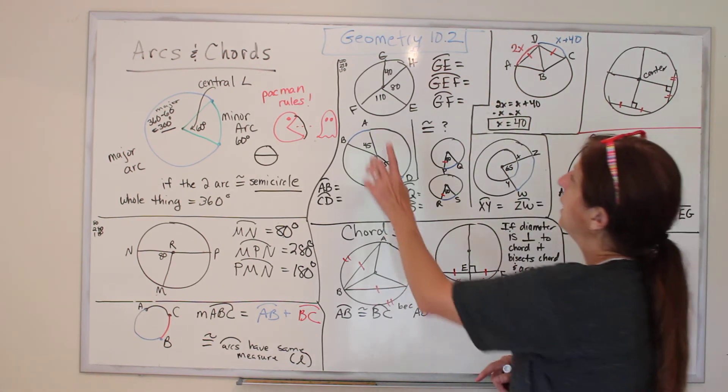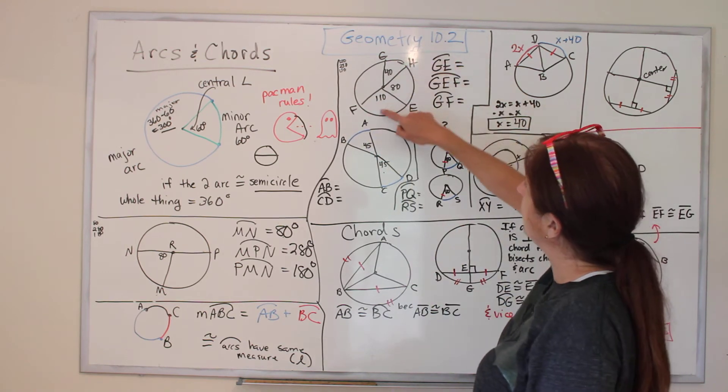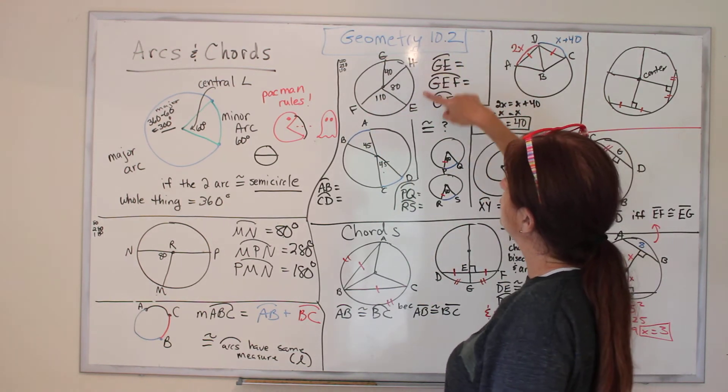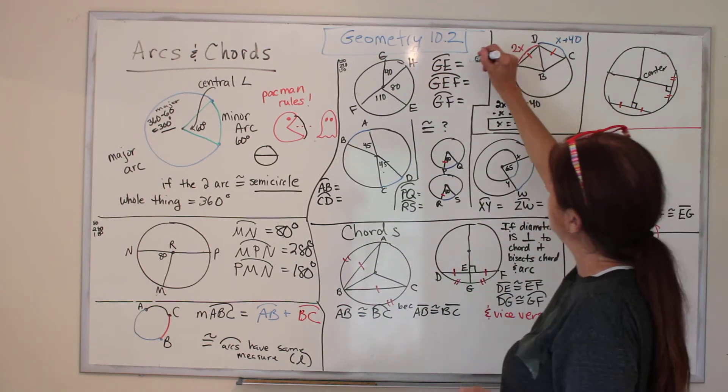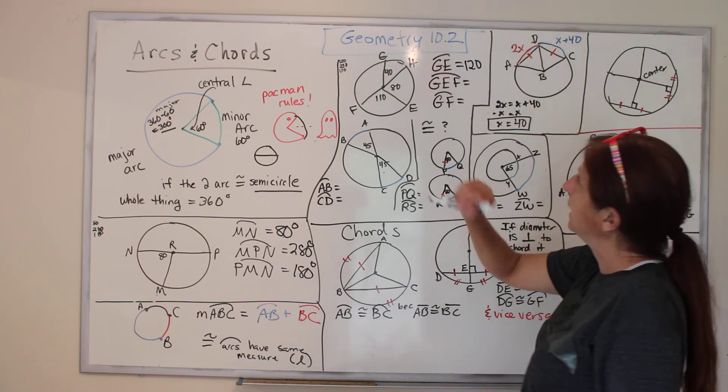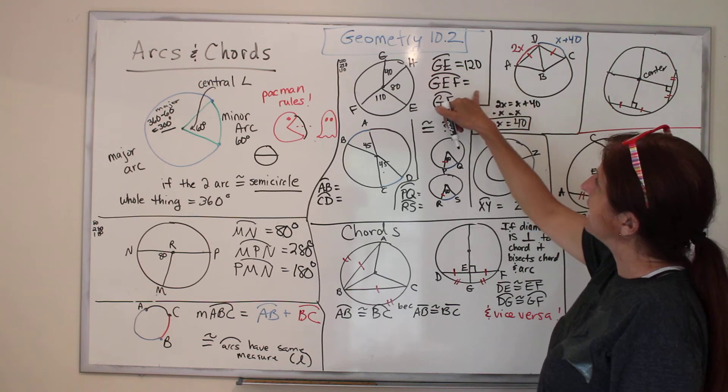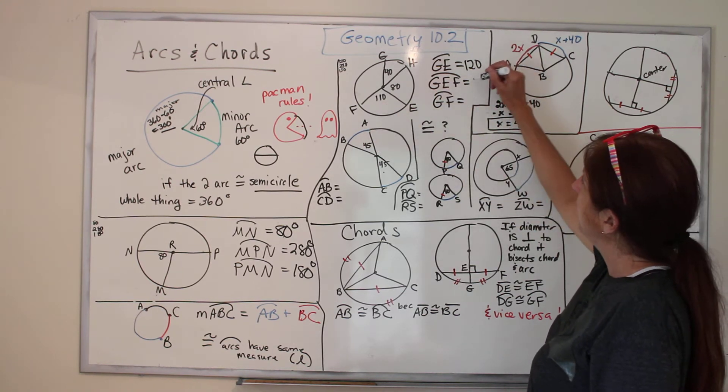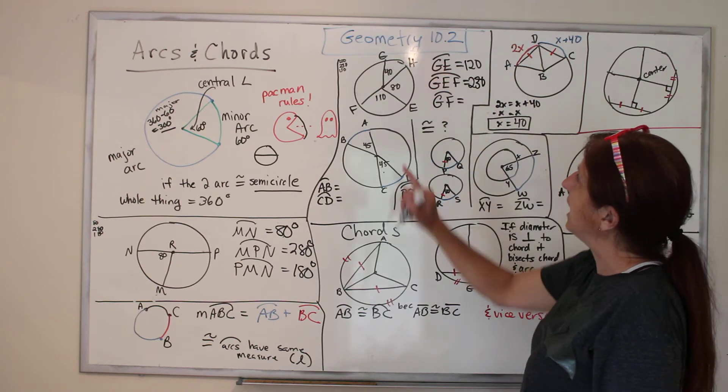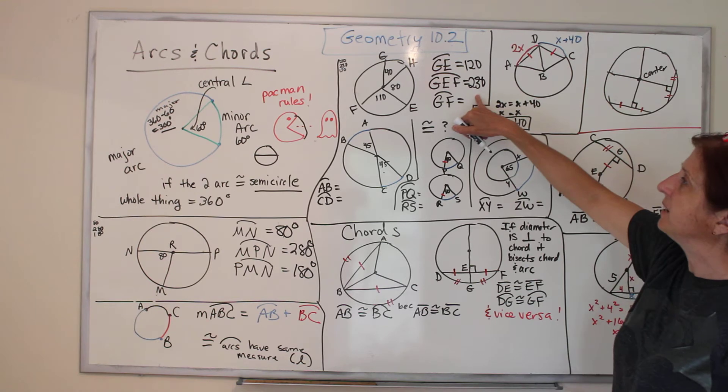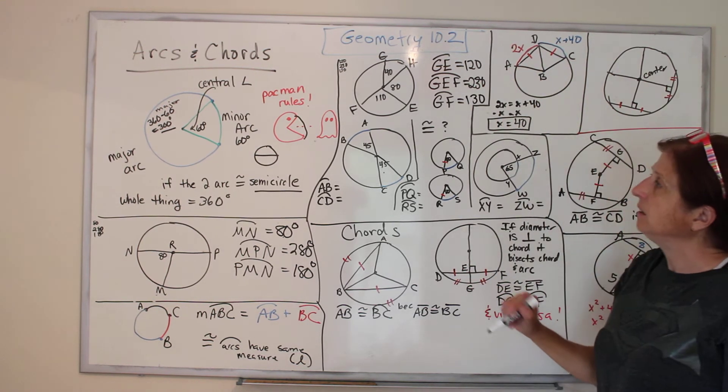Here's one we can do. We've got a circle with different measurements of the angles, 40, 80, 110. And first of all, they want to know what is GE. We're allowed to add them up. So 40 plus 80 is 120. Then they want GEF. We just add 110 to it, and that's 230. How about GF? We could do 360 minus 230, and we get 130.